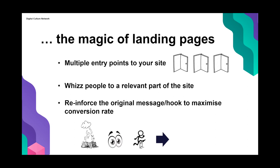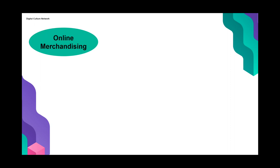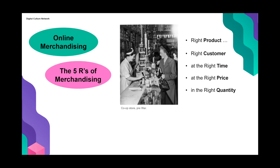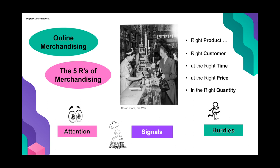What have we looked at today? Online merchandising — we went back in time, thought about the roots of traditional merchandising and the theory that underpins it: the Five R's, getting the right product for the right customer at the right time, at the right price, and in the right quantity. Then we thought about how that translates digitally — how we make the best use of customers' attention, how we use the signals they give us, and how to get them over those hurdles of shopping online. I hope that's given you lots of ideas and inspiration, and we're now moving on to our Q&A.